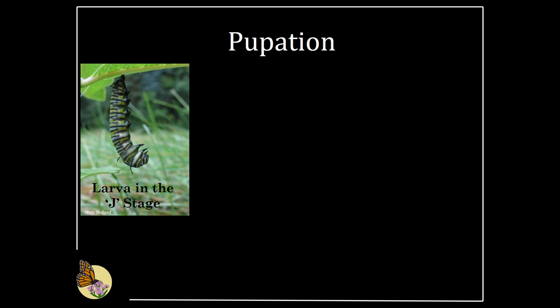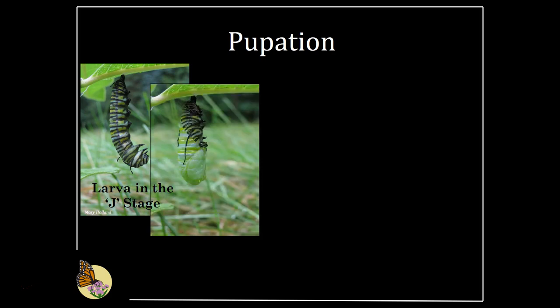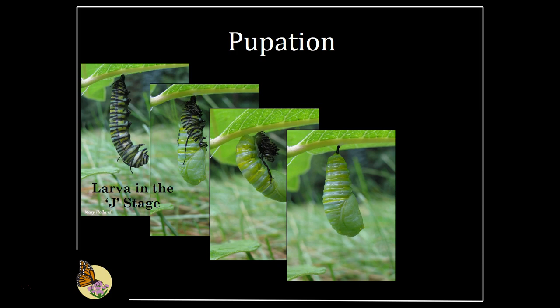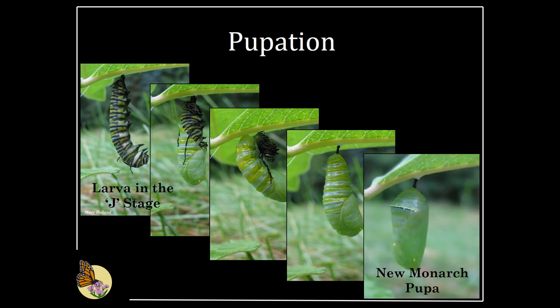The larvae spins a silk pad with a spinneret located beneath its mandibles, or jaws. Once the silk pad is spun, the larvae turns back around and hangs upside down from its abdomen in a J shape for about 12 to 18 hours. When ready, the larvae molts one last time. The skin splits at the back of the head and neck area, and it only takes about 30 seconds for the molt to finish. The shiny green pupa is still soft at first. Within half an hour, the pupa will reshape itself into what most people recognize as the monarch pupa, and the casing will completely harden within the next 24 hours. It's a myth that butterflies turn to goo inside the pupa — even the newly formed chrysalis shows wing veins and pads beneath the surface.